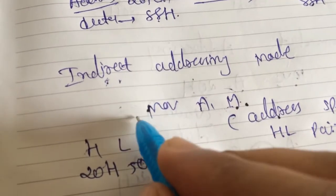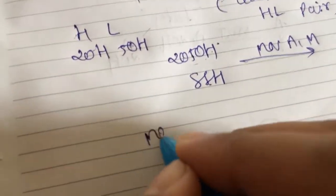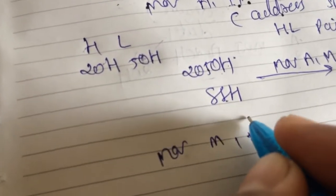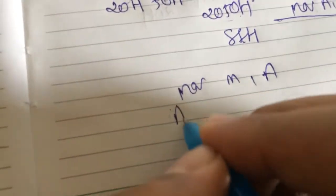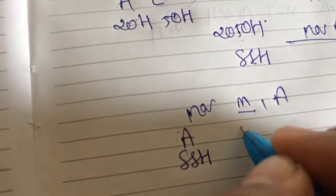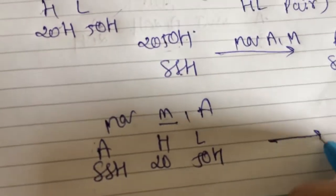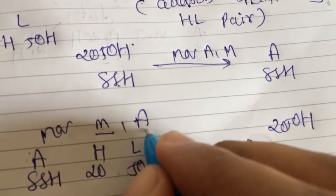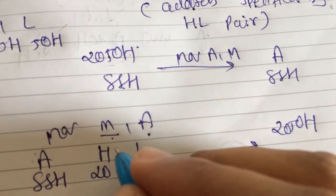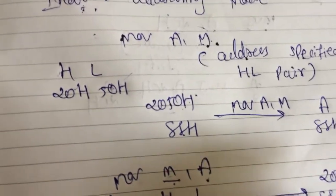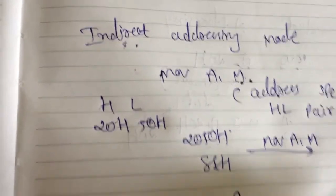In indirect addressing mode, there are two instructions: MOV A, M and MOV M, A. If A contains 88H and M is the address specified by HL pair — if H equals 20 and L equals 50, then the address becomes 2050H — then the accumulator data is stored into address 2050H, so 2050H now contains 88H. In this way we complete our addressing modes. Thank you.